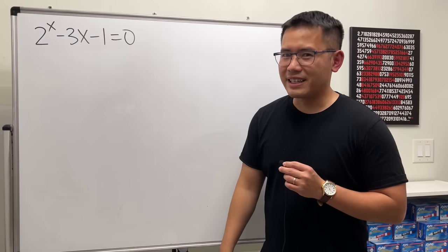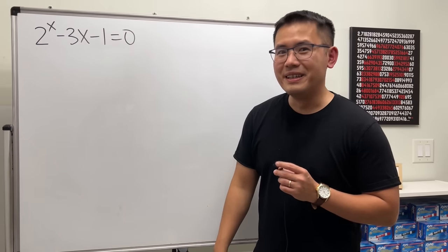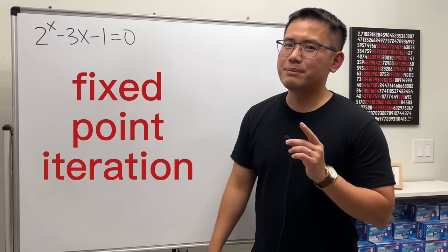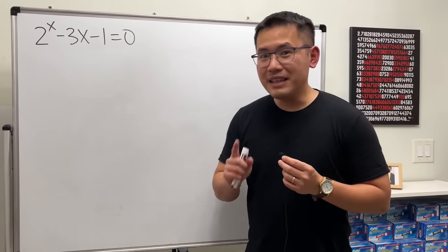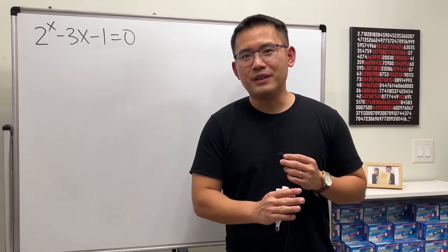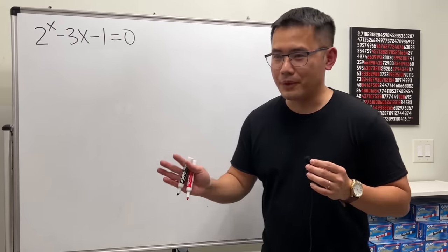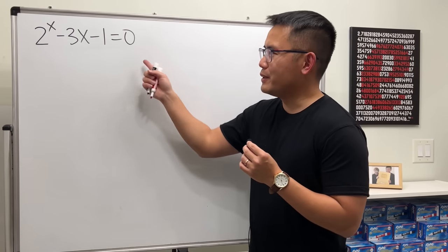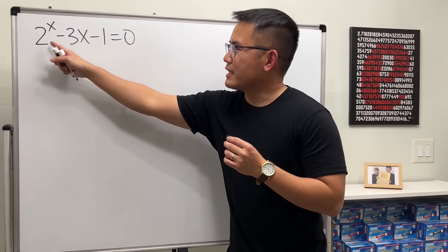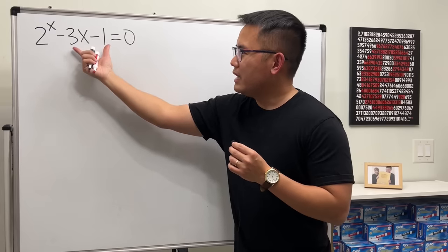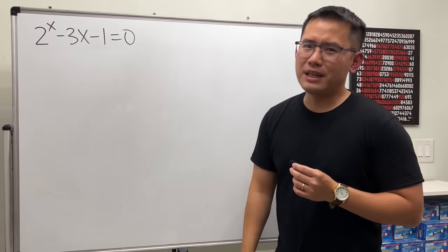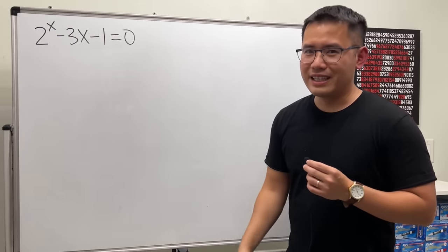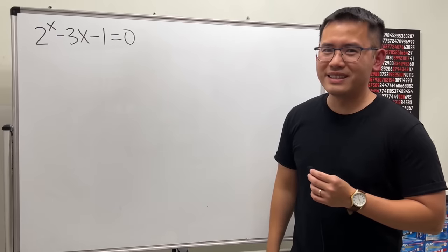Some of you might not like the method from earlier — that's called the fixed point iteration method, which deserves its own video. Here, let's talk about how we can solve an equation with an exponential part and a linear part. Is it possible? Yes, of course — otherwise I wouldn't be making this video.